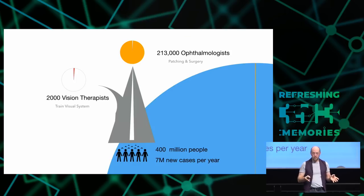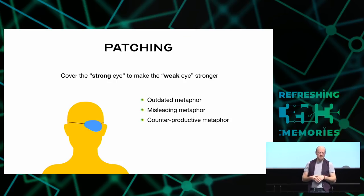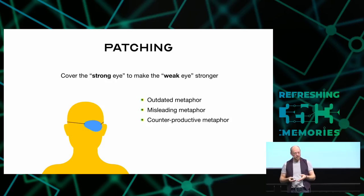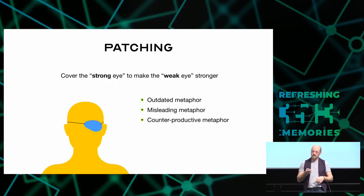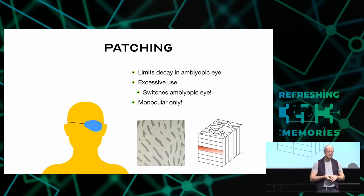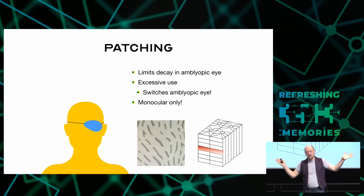And ophthalmologists, for like the last hundred years, have been pushing patching and surgery. So patching is this idea that you cover the strong eye to make the weak eye stronger. And this is a really outdated metaphor. It's a misleading metaphor. And I think it's a counterproductive metaphor. But that's not to say that it doesn't have value. The patching, I mean. Because the patching means that at least the optical dominance column for the suppressed eye is forced into activity. And that prevents it from decaying. On the other hand, if you overdo it and you patch too much, the brain says, I just want to use one eye. What are you doing to me? You want me to use that eye? Fine. And then it suppresses the other eye. And it switches over.